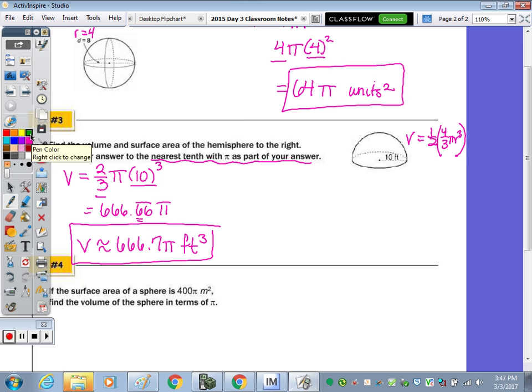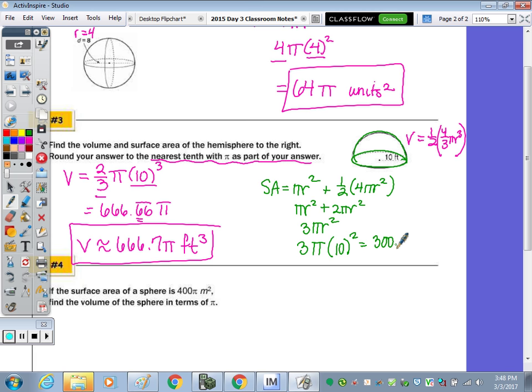For surface area, we have this flat surface. So our surface area is going to be πr² plus this curved surface. Now, the curved surface is the total surface area. So we're then going to add in half of the surface area, which was 4πr² or 2πr². So if you want to look at it as πr² plus 2πr², we're going to have to do 3πr² for the total formula. So 3 times π times 10², which is 300π. Now, rounding to the nearest tenth, so we do have to put 300.0π square feet.